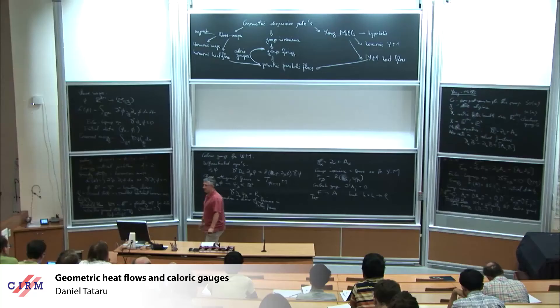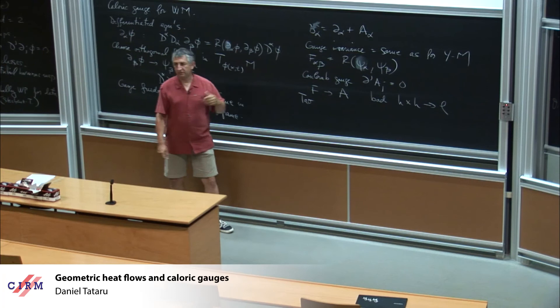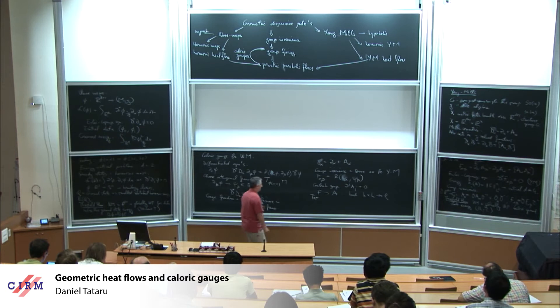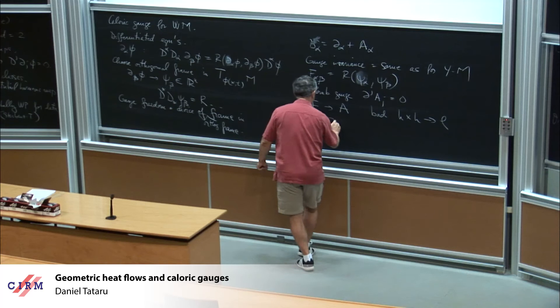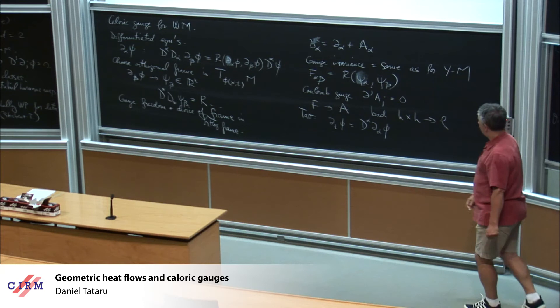But the Coulomb gauge has one issue: when you look at the question of recovering A from the curvature, you want to put this A into the equation and try to solve it. When you do this, you have some bad high-frequency paired with high-frequency going to low-frequency interactions. And that causes Joachim, in particular, considerable headache.